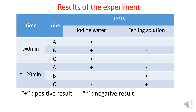Results of the experiment: at time t equals zero, tube A containing distilled water and cooked starch, tube B containing salivary amylase and cooked starch, and tube C containing starch paste, salivary amylase, and maltase all gave a positive result with iodine water, indicating that starch is present.